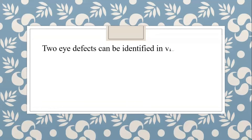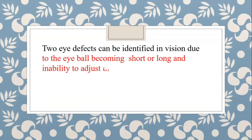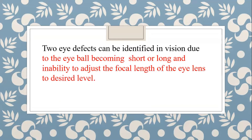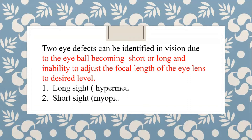Eye defects can be identified in vision due to the eyeball becoming short or long, and the inability to adjust the focal length of the eye lens to the desired level. The two defects are long sight and short sight. Another name for long sight is hypermetropia, and another name for short sight is myopia.